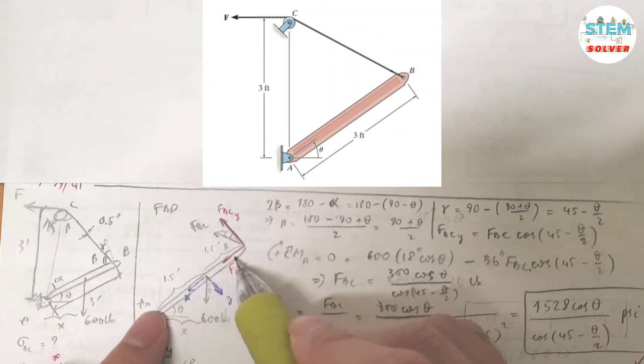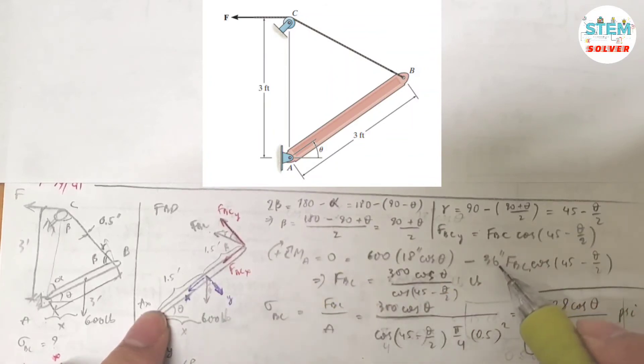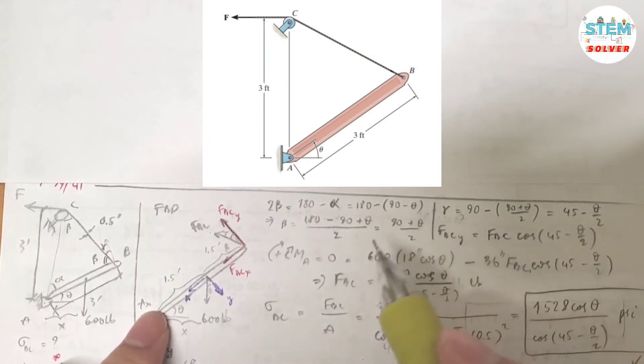So I have this force times the distance. The distance from here to here is 3 feet times 12, which is 36 inches. And set this expression equals zero because we are in equilibrium.